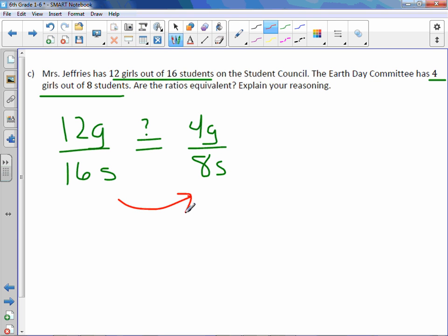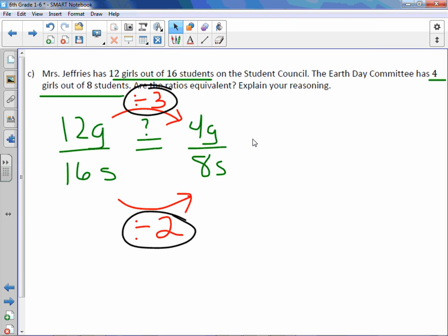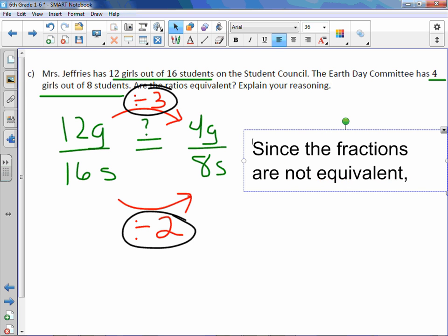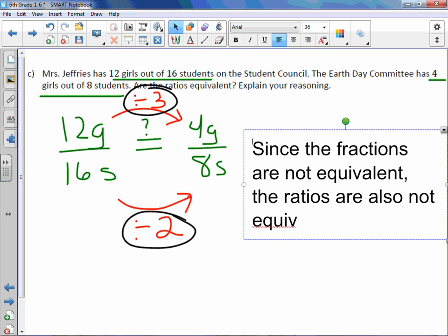How would you get from 16 to 8? You would divide by 2. And to get from 12 to 4, you would divide by 3. So since these are not equal, I know that these fractions or ratios are also not equal. So since the fractions are not equivalent, the ratios are also not equivalent.